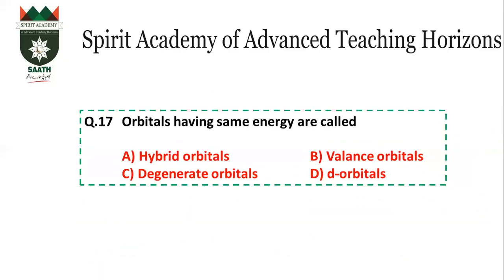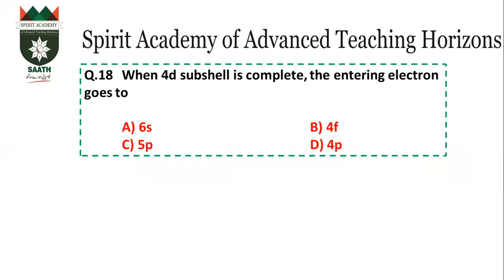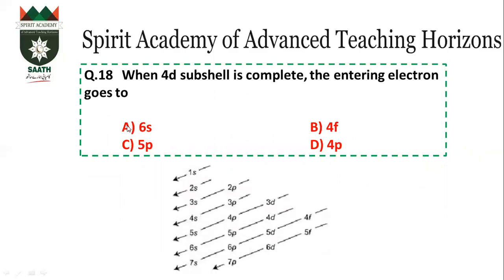Question number 17: Orbitals having the same energy are called degenerate orbitals. Their energy is the same. The answer is C. Question number 18: When 4D is complete, the entering electron goes to — according to the Aufbau principle, after 4D is filled, the electron goes to 5P. The answer is C.